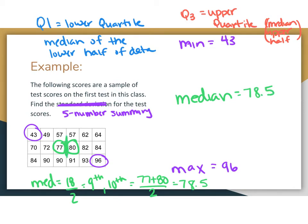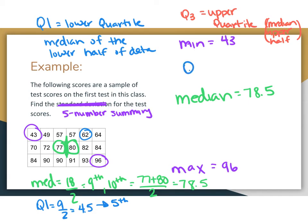The median falls between those two values, splitting the data set into two equal parts — nine values on the lower side and nine values on the upper side. To find Q1, we find the median of the lower half. We have nine values, which is an odd number, so there is a natural middle. Nine divided by two is four and a half — we round up to the 5th observation. Counting one, two, three, four, five, Q1 is equal to 62.